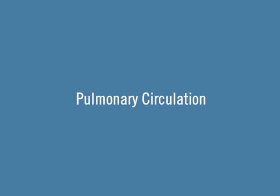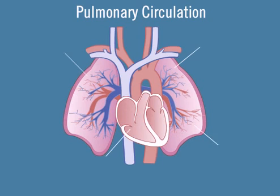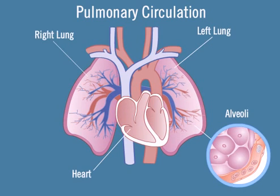Pulmonary circulation does not directly provide oxygen to the tissues. Pulmonary circulation functions only to bring blood into close contact with the alveoli of the lungs so that gas exchange, or external respiration, can occur.